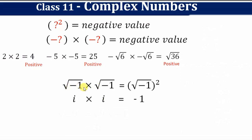Here, √(-1) × √(-1) = (√(-1))², and the square and root cancel, giving us −1. So √(-1) is called the imaginary number, also referred to as iota.